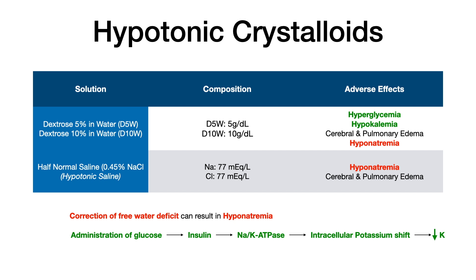The big thing to know with hypotonic crystalloids for exams is that for dextrose in water — D5W, D10W — you need to know that this can cause both hyperglycemia and hypokalemia. And then for both dextrose in water and half normal saline, this can cause hyponatremia. The hyponatremia is rather simple to understand: you're correcting a free water deficit, and when you give somebody a hypotonic solution, this results in hyponatremia.